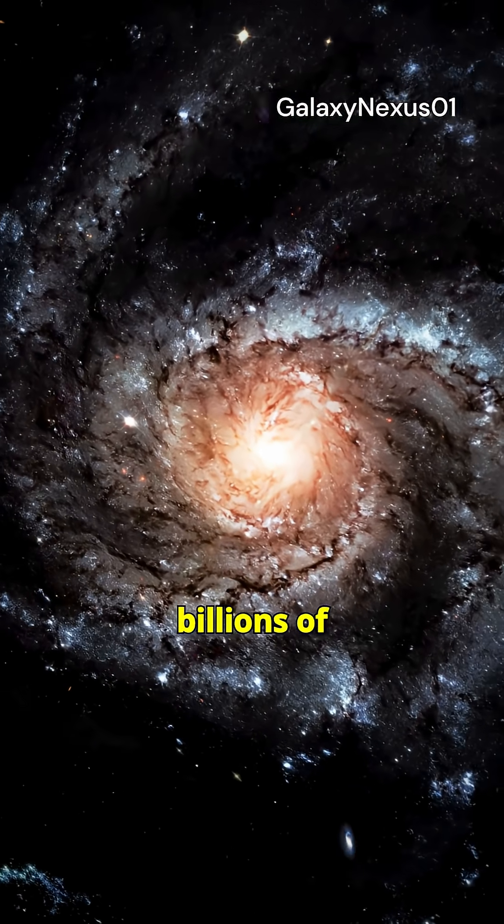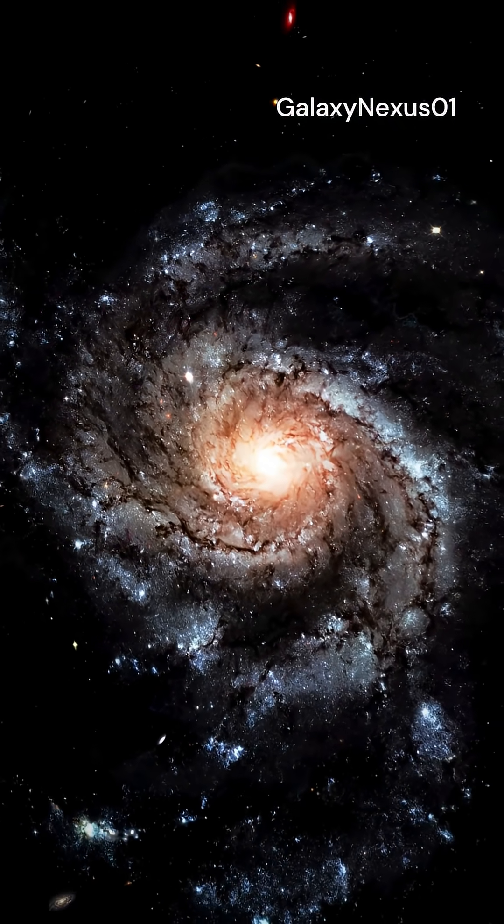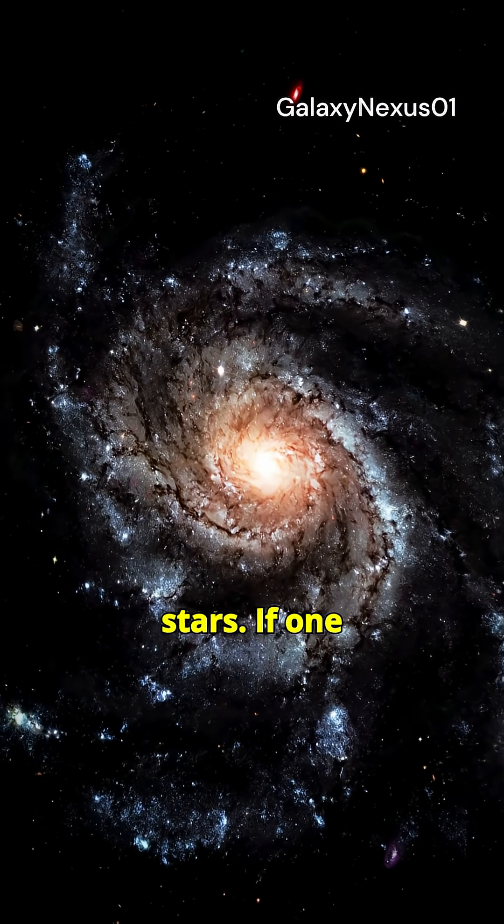Astronomers think there could be billions of rogue planets drifting through the Milky Way, some the size of Earth, others massive like Jupiter, all invisible between the stars.